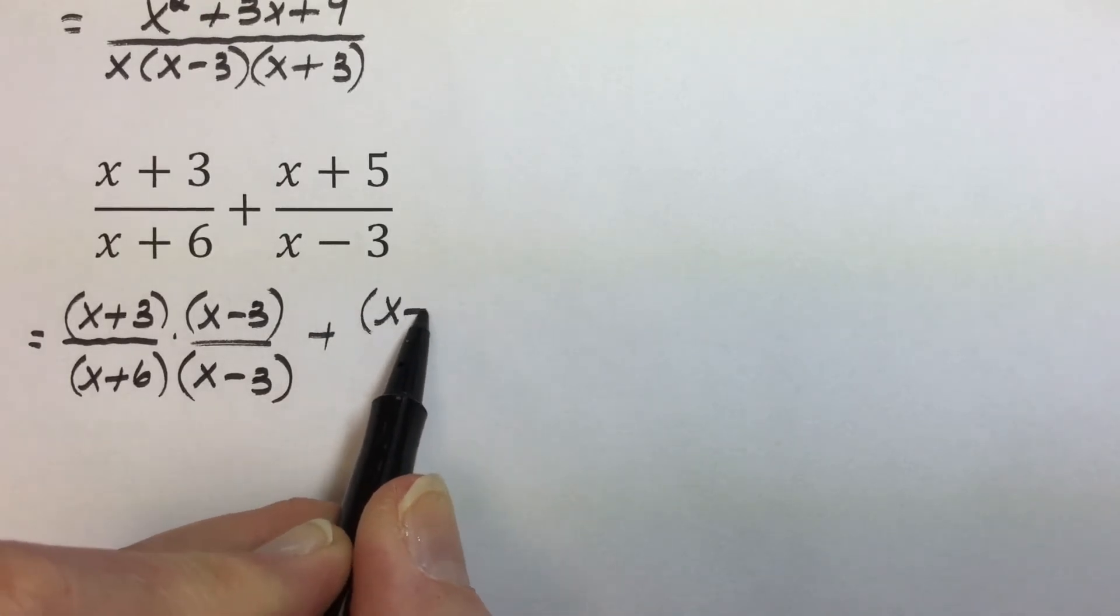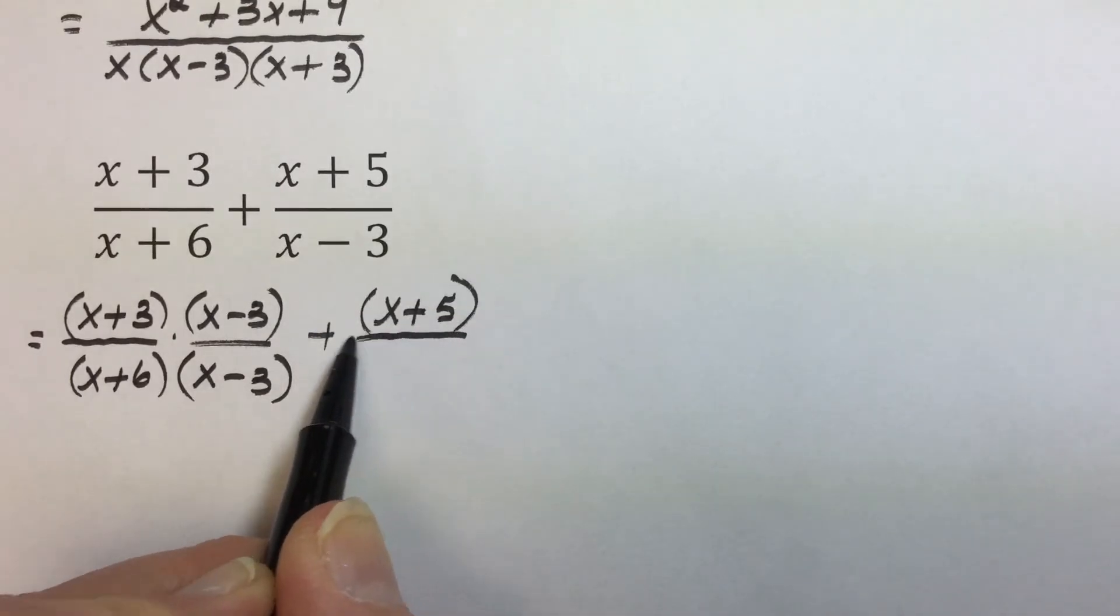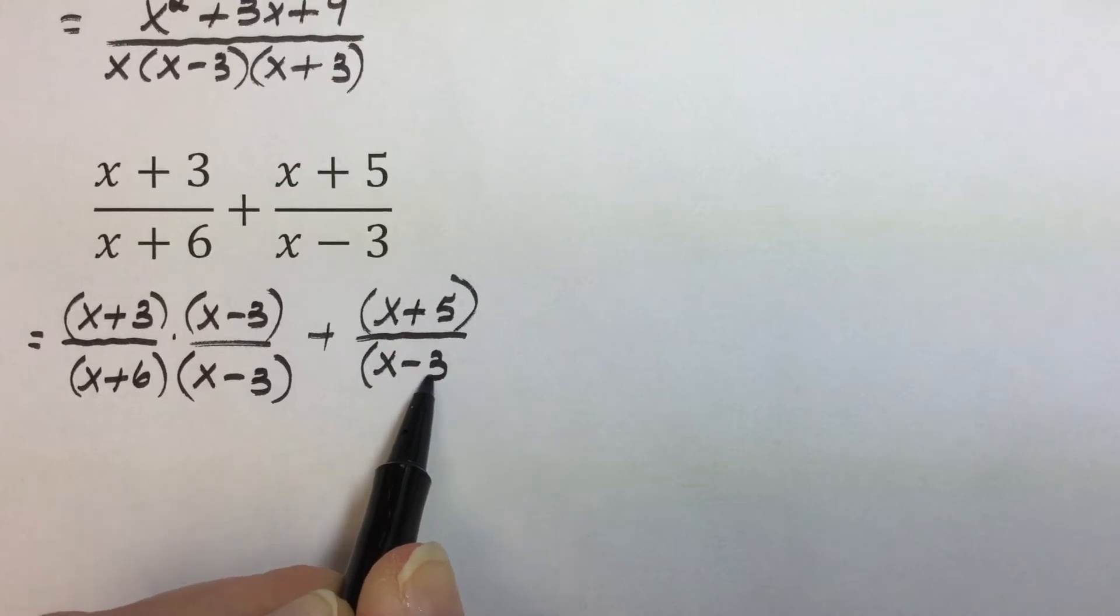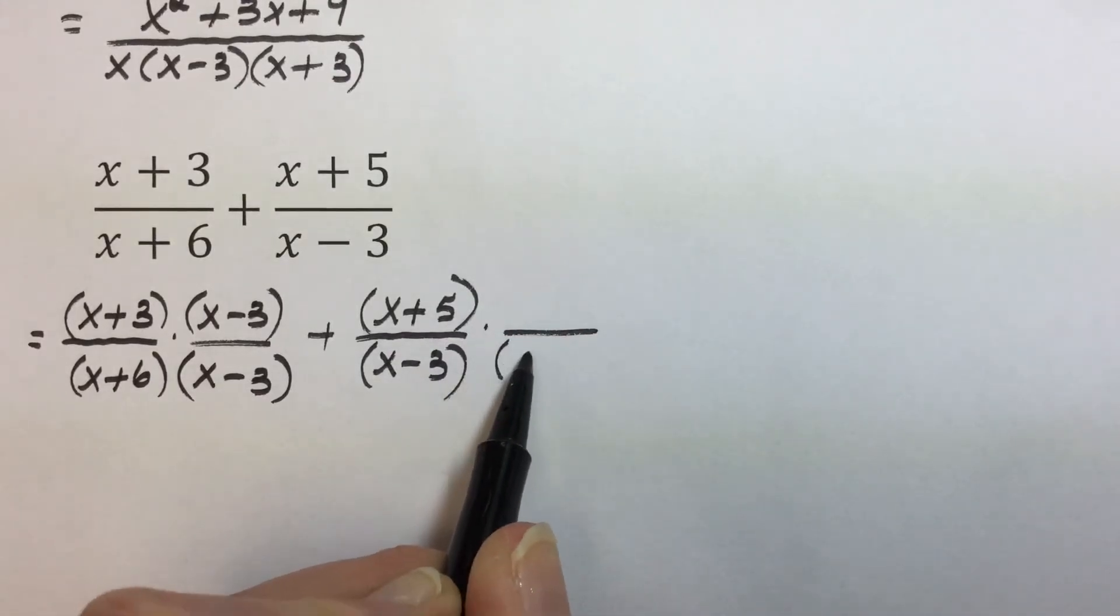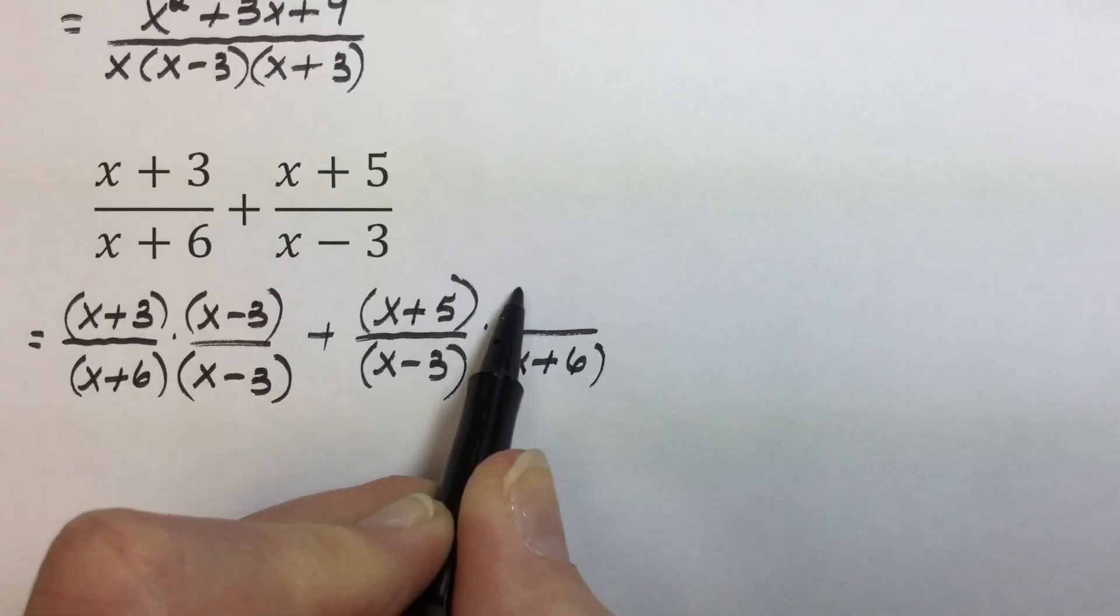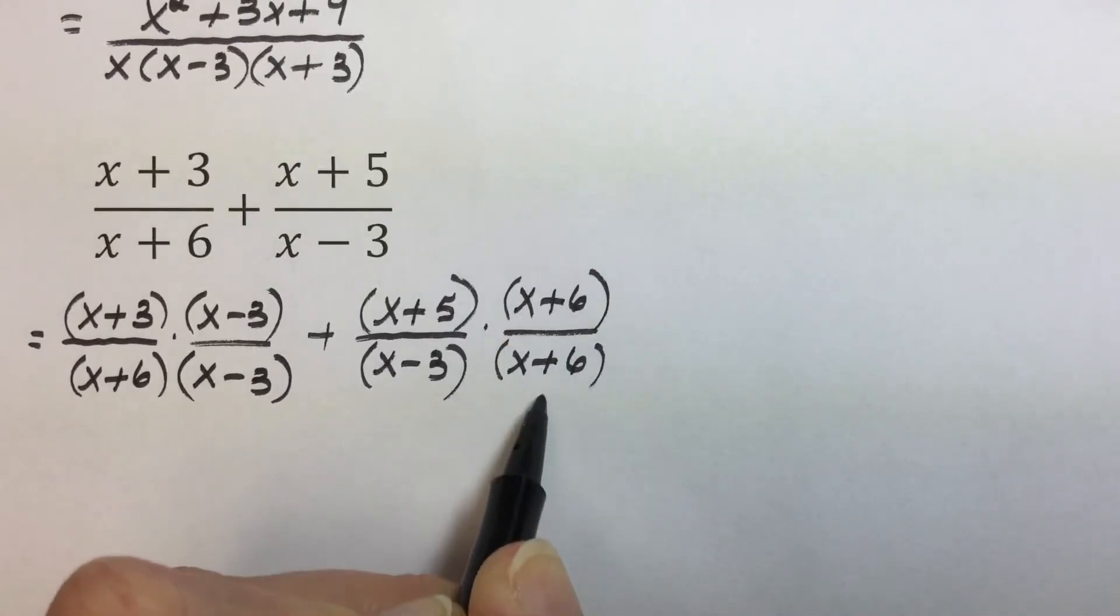The second rational expression has the x minus 3, but it's missing the x plus 6 factor and expressing it as a fraction, it's equivalent to 1 and multiplying by 1 doesn't change anything.